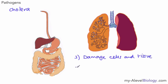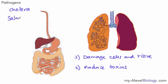Once inside the body, pathogens can either damage cells or damage tissue directly. The other thing they can do is produce toxins, or poisons, that damage cells. An example of bacteria that produce toxins is Salmonella — if somebody gets food poisoning from Salmonella, it is as a result of the toxins produced by that microorganism. That gives an overview of how pathogens can enter the body and start to cause problems.